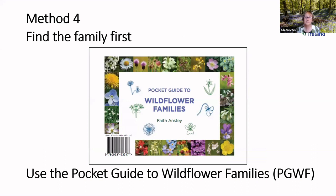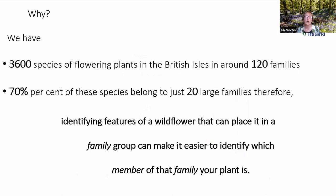Method four is the method we are going to guide you through today: find the family first, using the pocket guide to wildflower families — which I'll just call the pocket guide from now on. To recap: we have 3,600 species, 120 families, and 70% of species belong to just 20 large families. Therefore, identifying the features of a wildflower that can place it in a family group makes it easier to identify which member of that family your plant is.